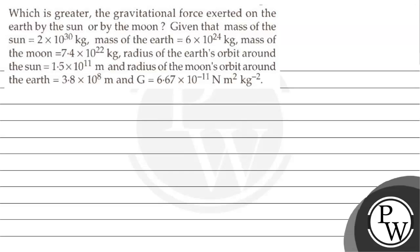Let's start this question. Which is greater: the gravitational force exerted on the earth by the sun, or by the moon? Given that mass of the sun is 2 × 10^30 kg, mass of the earth is 6 × 10^24 kg, mass of the moon is 7.4 × 10^22 kg, radius of the earth's orbit is 1.5 × 10^11 m, and radius of the moon's orbit around the earth is 3.8 × 10^8 meters.